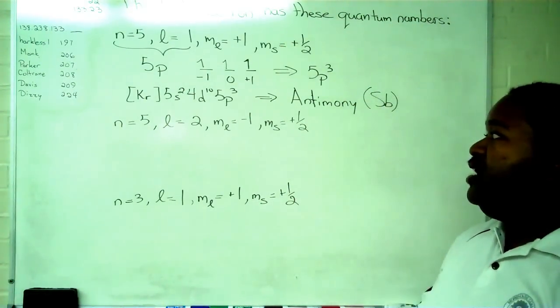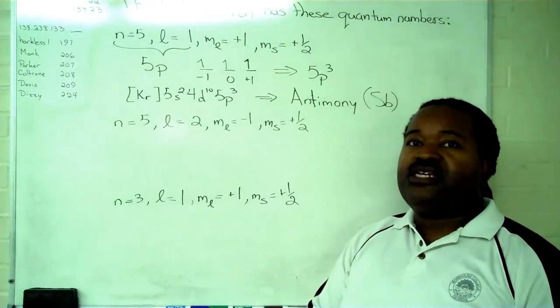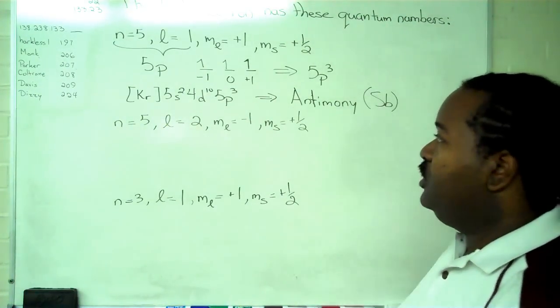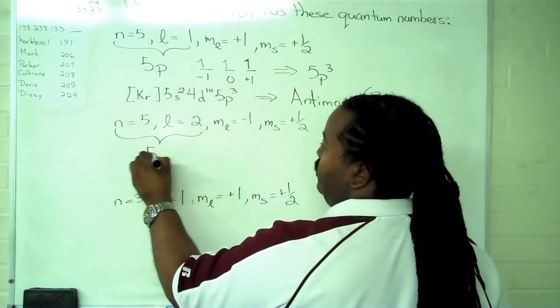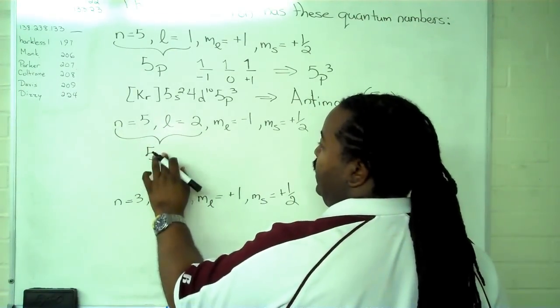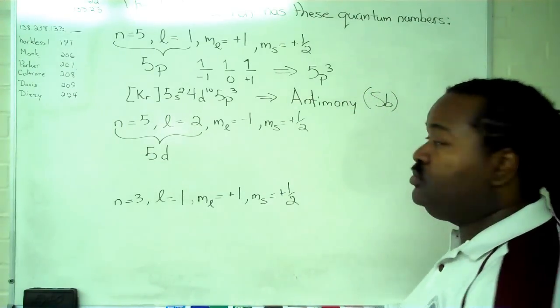For the next one, we have n equals 5, l equals 2, m sub l is minus 1, and m sub s is plus 1 half. In order to do this, we take these two and identify what orbital we're looking at. That's a 5d because of the l equals 2.